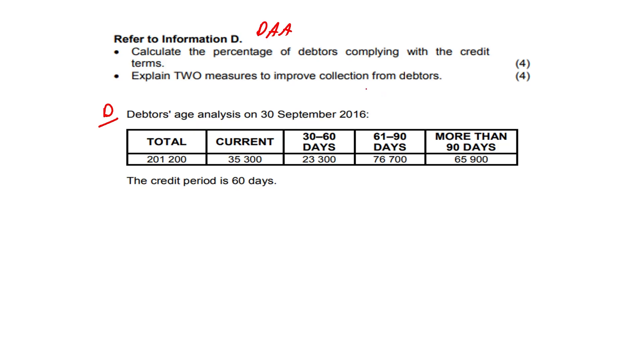Here we have our debtors age analysis on the 30th of September 2016. The credit period is 60 days. So who is complying?